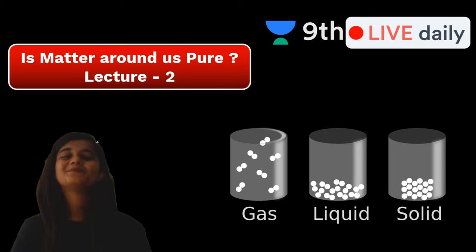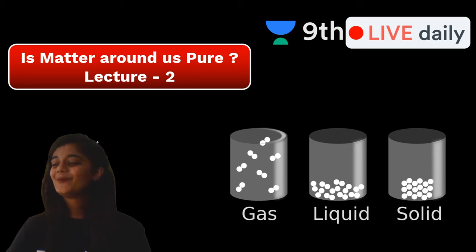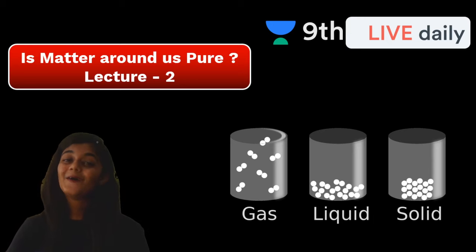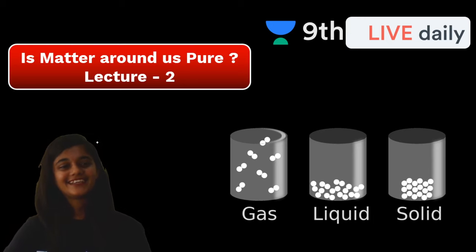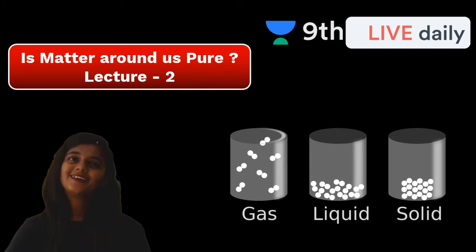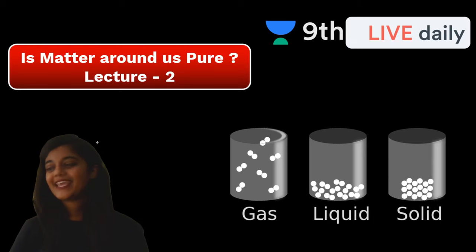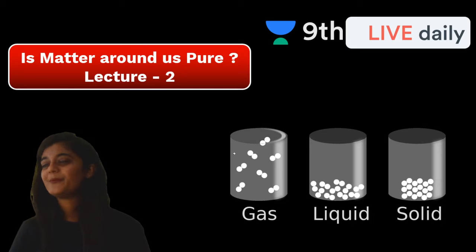Hi, hello, welcome to An Academy Class 9th and 10th YouTube channel. We have already started a new chapter — 'Is Matter Around Us Pure?' This is chapter number 2. We have already finished chapter number 1, so this is lecture 2 today for chapter 2. Welcome to everyone.